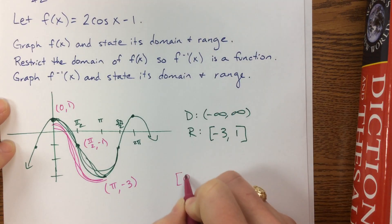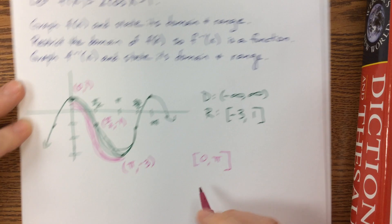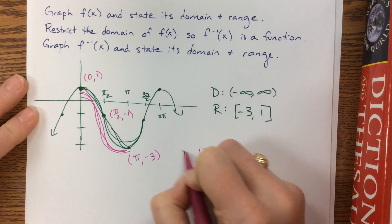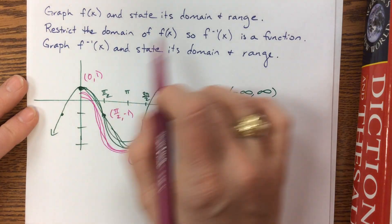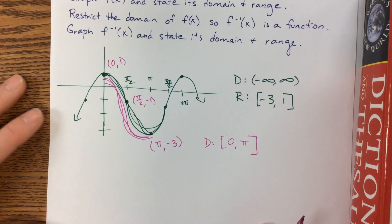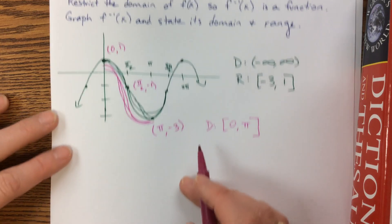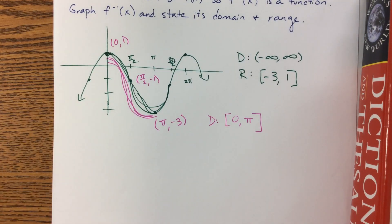We're going to go from 0 to π. That's the new domain when we restrict the domain of the original function. So now when we go to graph the inverse, we can switch our x and y values.